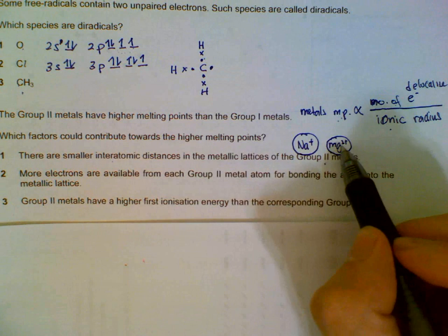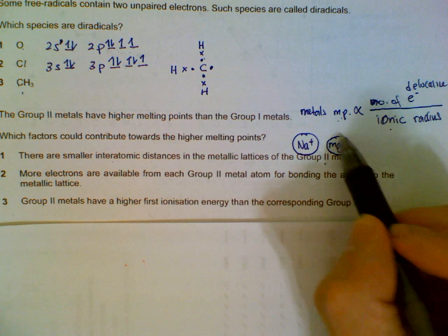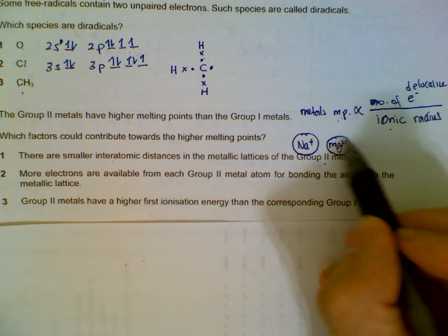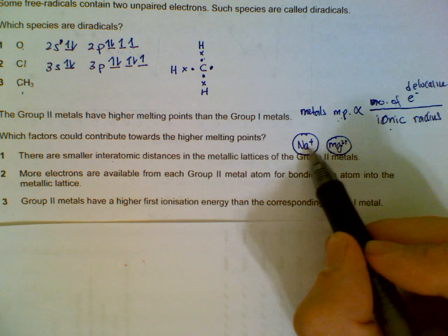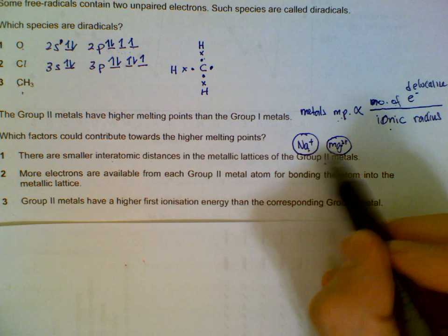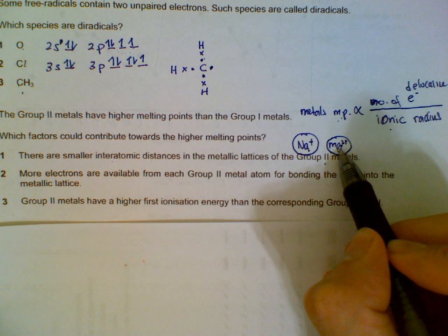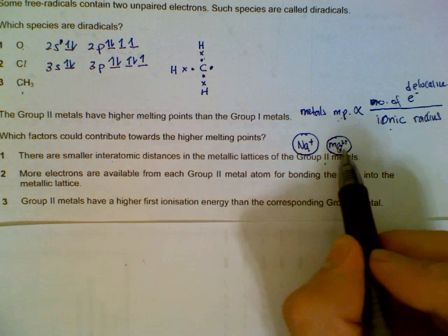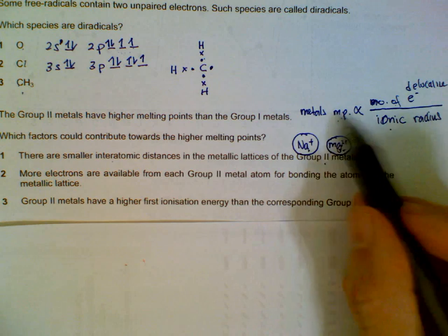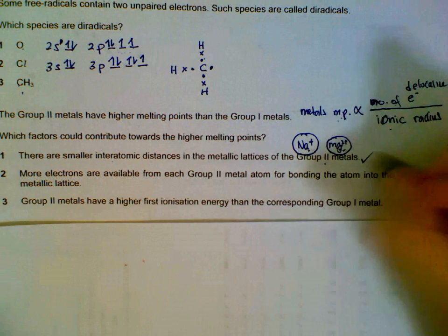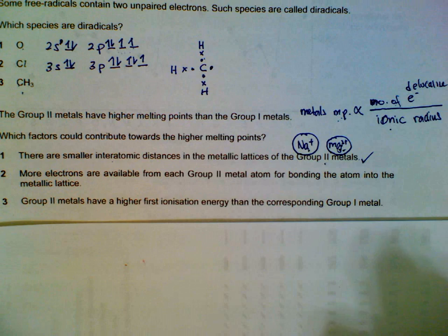The magnesium 2+ because of more protons will be able to pull the shell closer to the center. So group 1 have larger radius than group 2, comparing across the period. Because group 2 is smaller in radius, they will have higher melting point. So this contributes to the higher melting point.